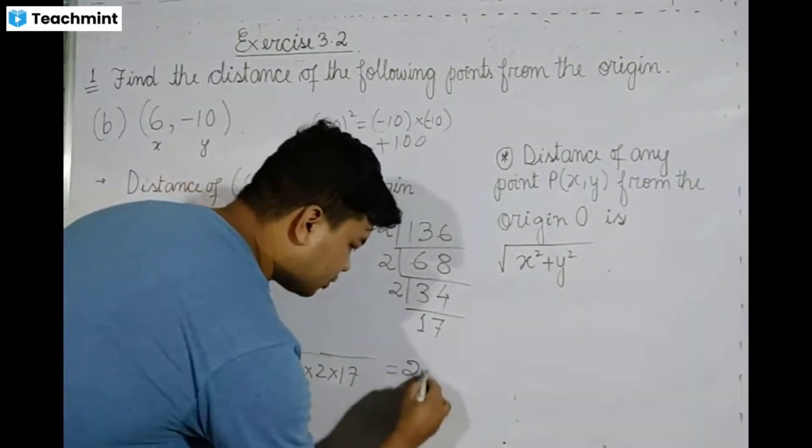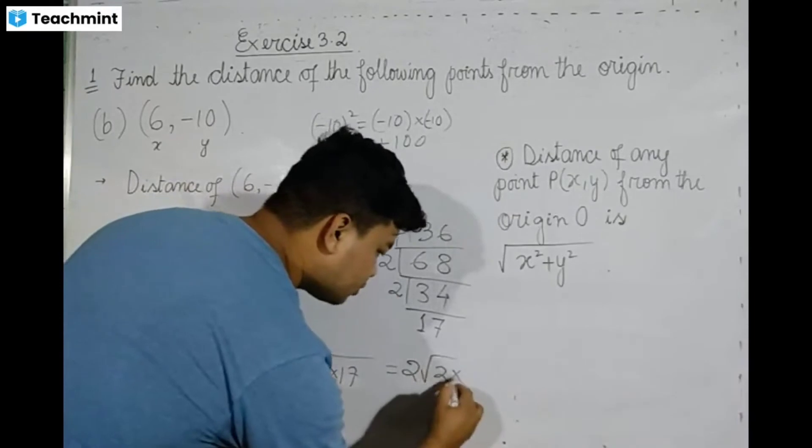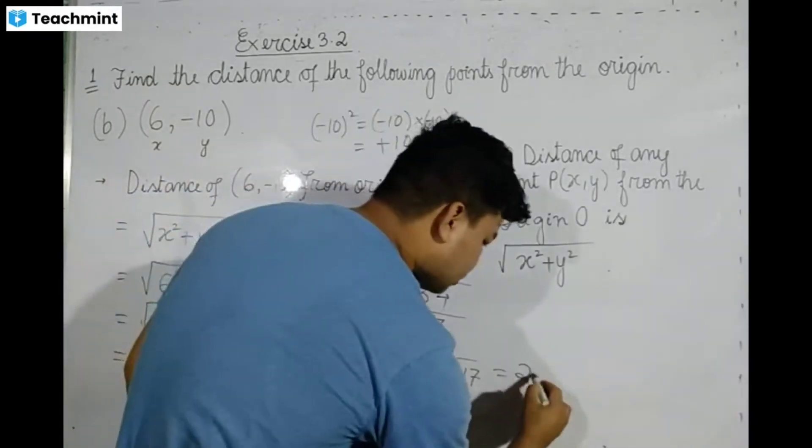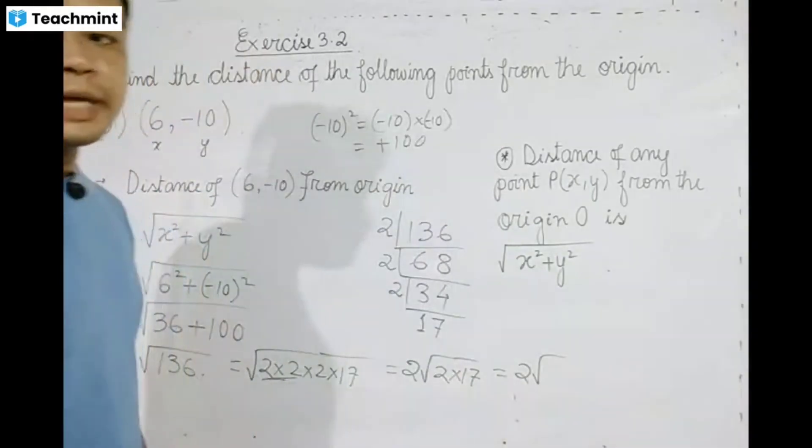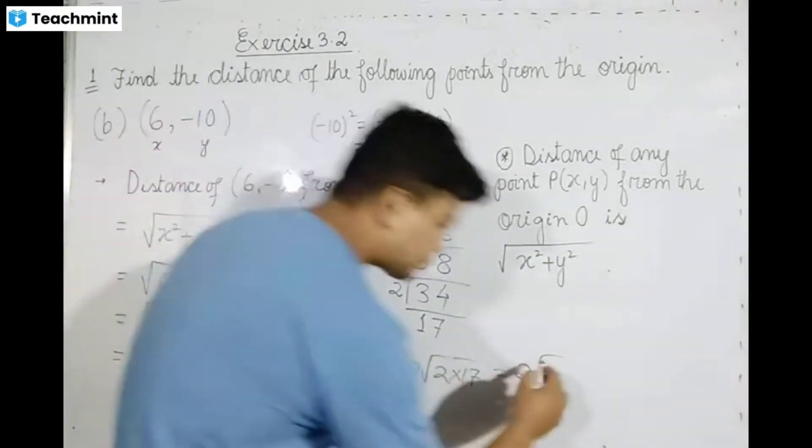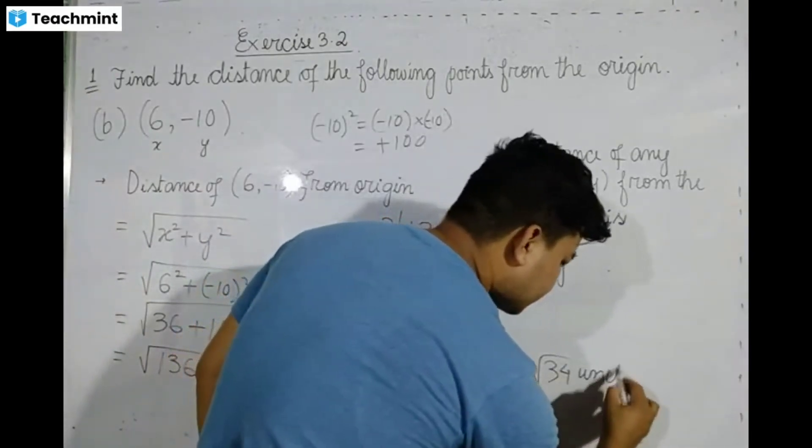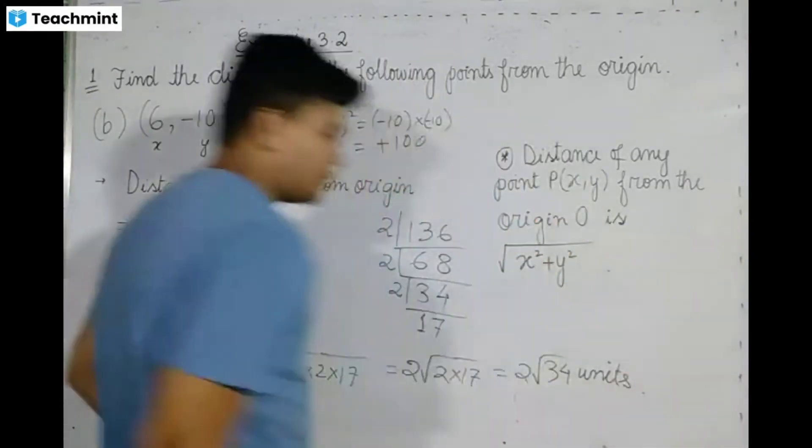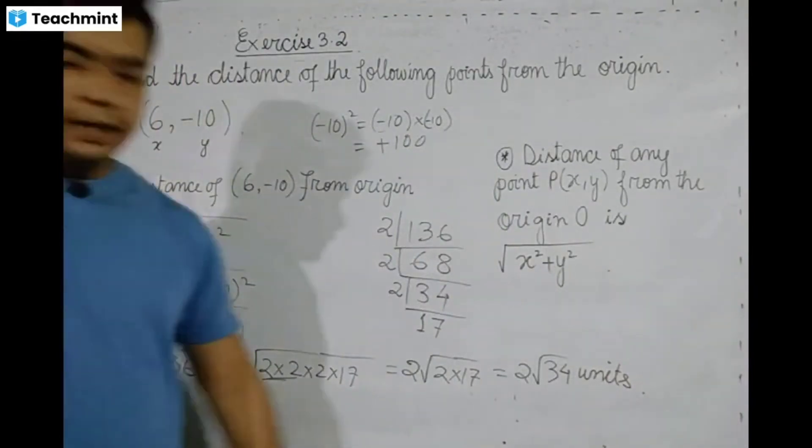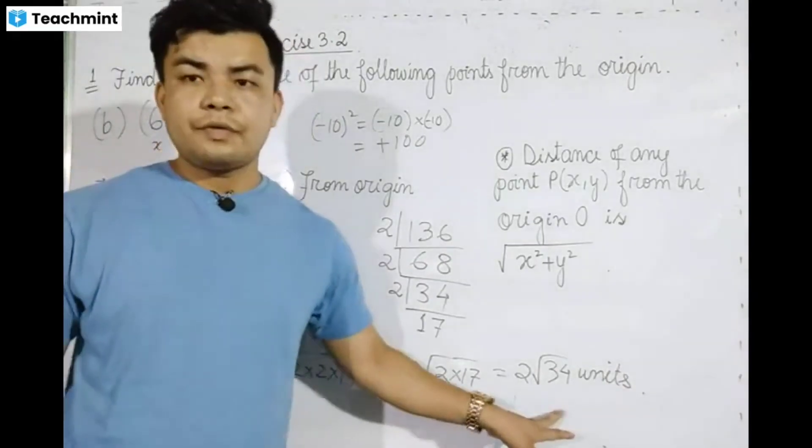17 times 2 gives us 34. So we get √136 = √(2×2×2×17) = 2√34 units. The distance of (6, -10) from the origin is 2√34 units.